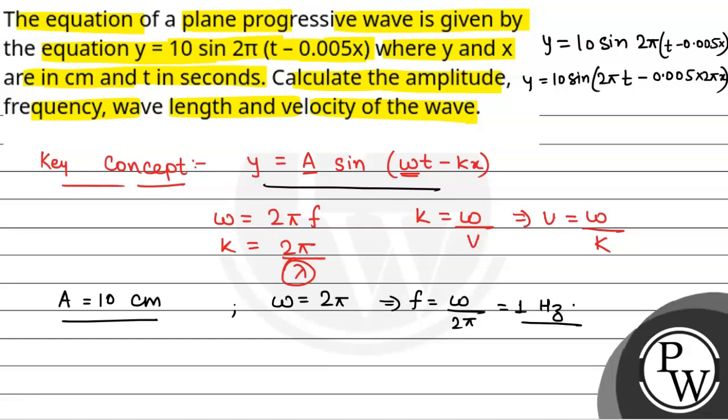Frequency we have 1 hertz. Now, we have k which is k = 0.005 × 2π.